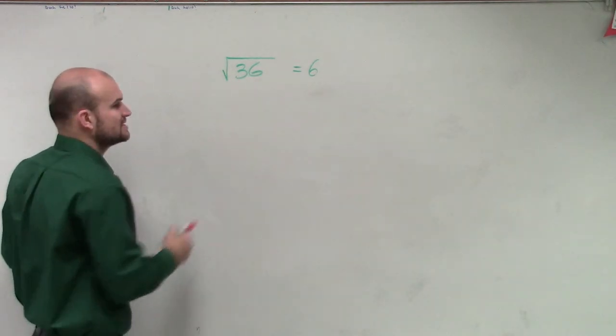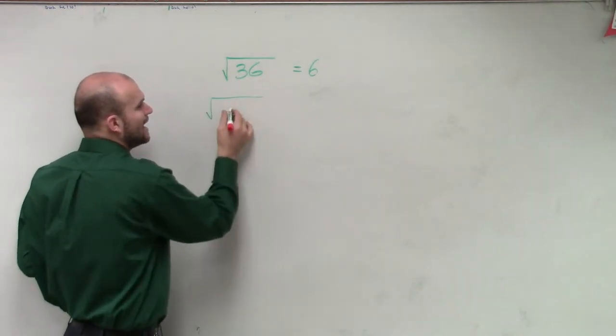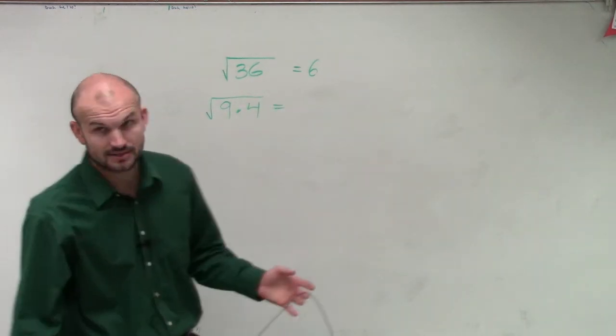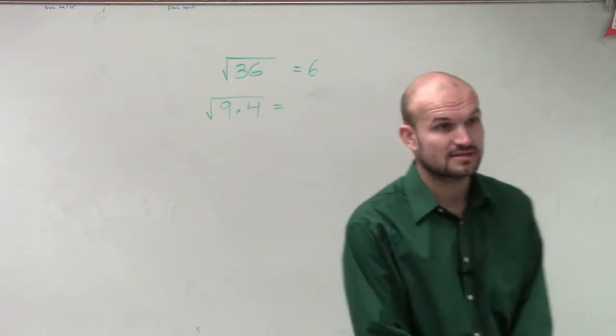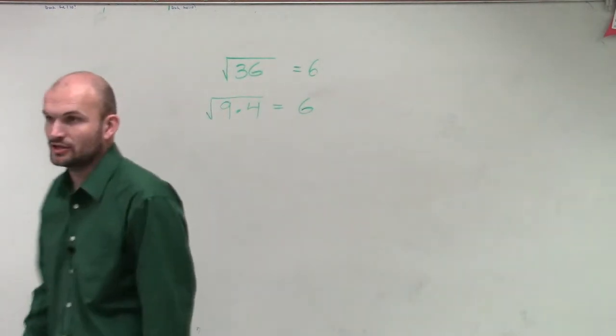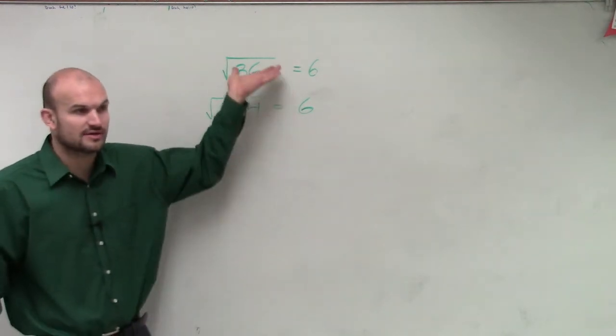So remember, square root of 36, when we're simplifying them, I could rewrite this as square root of 9 times the square root of 4. Correct? Is that still going to equal 6? Yes. Does everybody follow me with this? Does that still equal 6? Because 9 times 4 is 36, right?